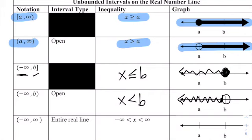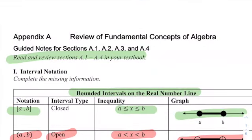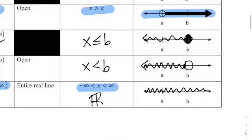Whenever we have something that includes the entire number line, in interval notation that's negative infinity to infinity with parentheses on both sides. We can also write that as all real numbers. When we graph that, we shade the whole number line, including all values.